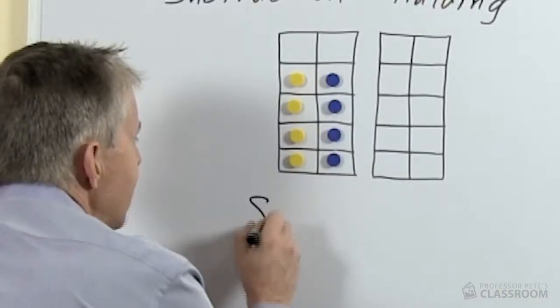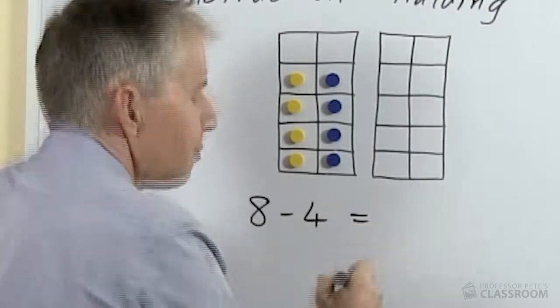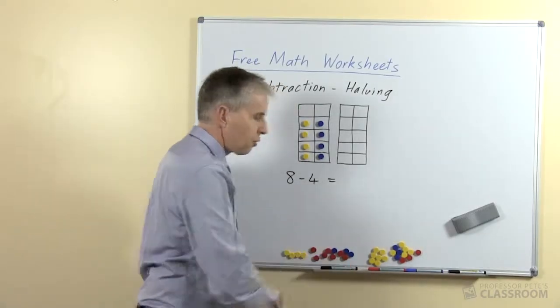So here's our example where we have 8, we're going to say what do you have if you take away 4? And of course the answer is 4.